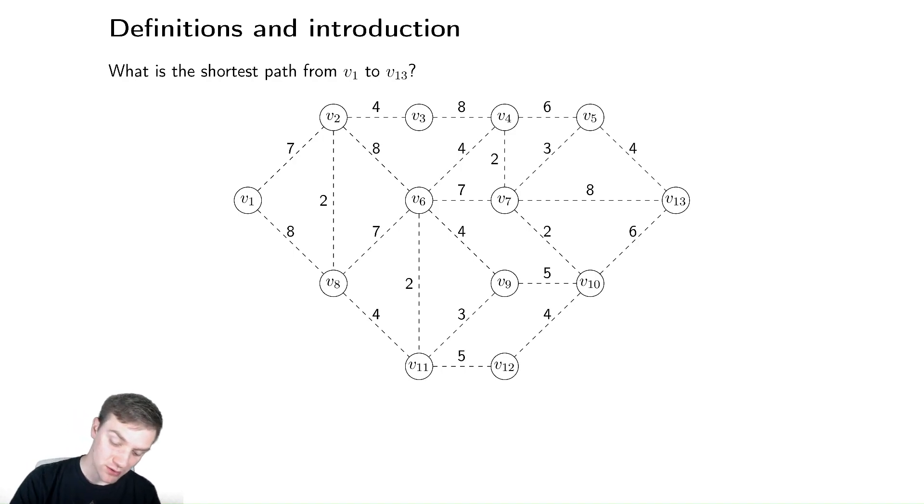For our shortest path algorithm we have some starting location, v1, and some ending location. For this example we're going to call it v13. Then the question is what is the shortest path to get from v1 to v13? Looking at it, maybe it's not so obvious.